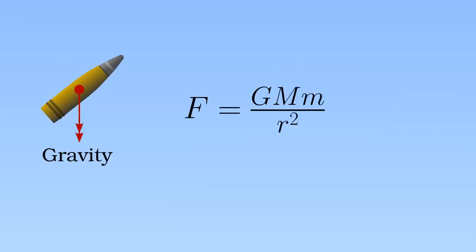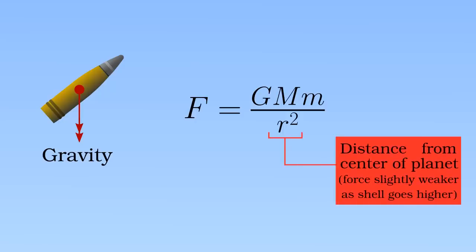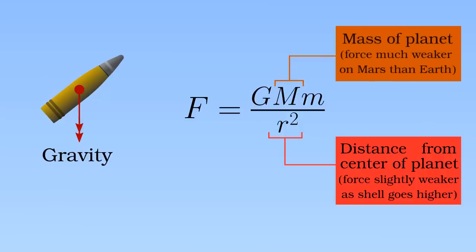The force of gravity falls away with the square of the distance from the center of the planet, meaning that the shell feels a weaker force downwards the higher up it is, but this is usually a very small effect. The acceleration due to gravity is lower on Mars than on Earth—it's a much smaller planet—meaning that the range and maximum ordinate of artillery would be much higher.